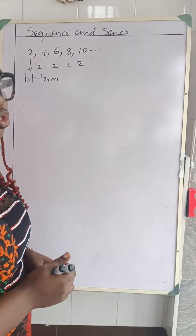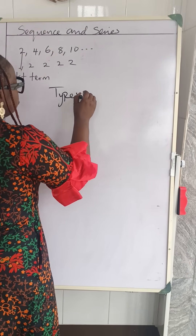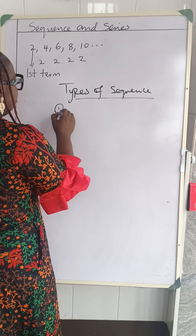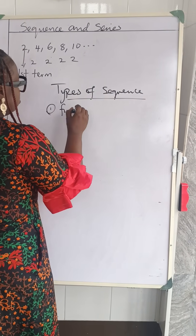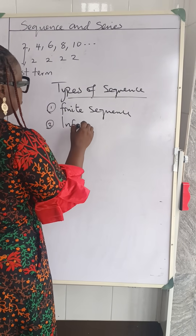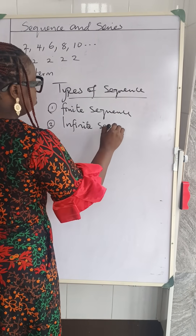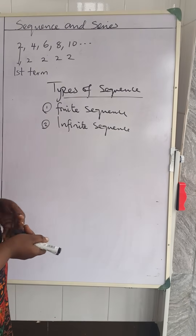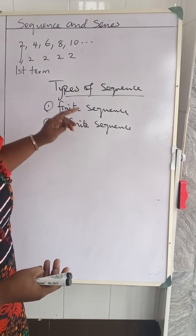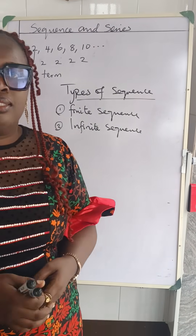And this takes us to the types of sequence. We have: number one, finite sequence, and number two, infinite sequence. In English, we understand that finite means something that has an end. And now we are applying it to mathematics. Types of sequence — the first one is finite sequence, which means it has an end.